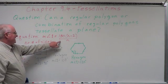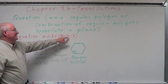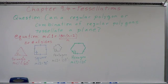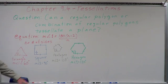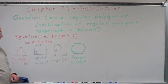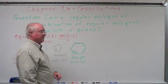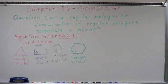For a square: 180 times (4 minus 2) equals 180 times 2, which is 360 divided by 4, giving us 90 degrees. The interior angle of a pentagon is 108 degrees. For a hexagon, one interior angle is 120 degrees. And we could go on for heptagon, octagon, nonagon, decagon, dodecagon, and find that interior angle for each.